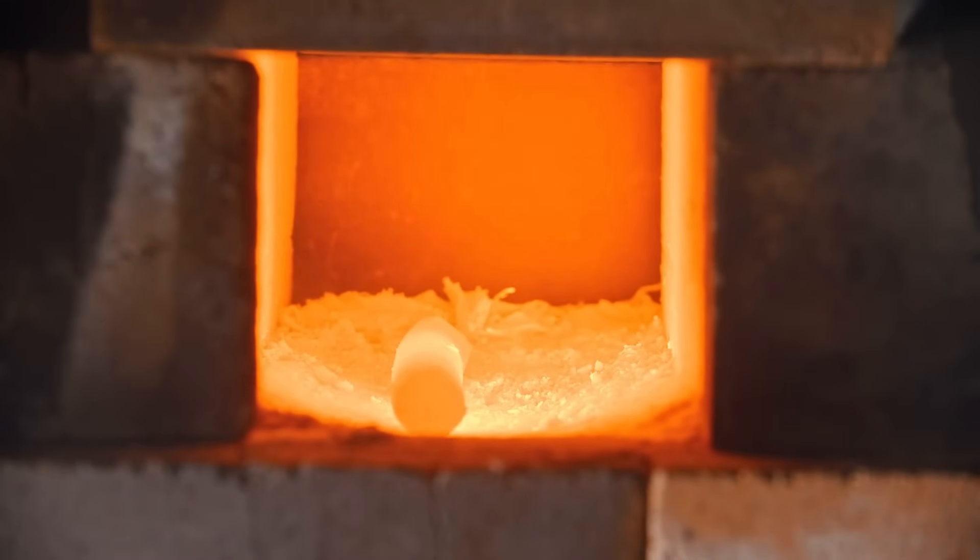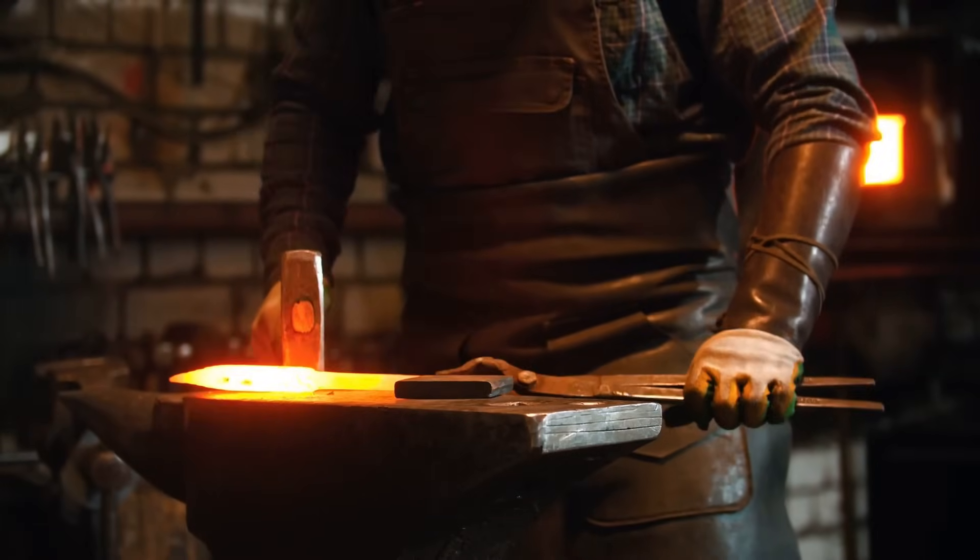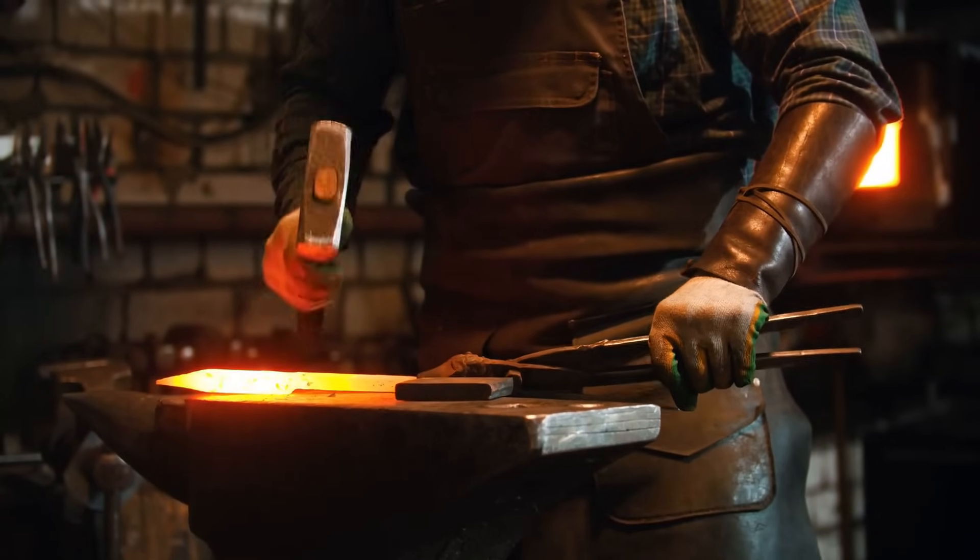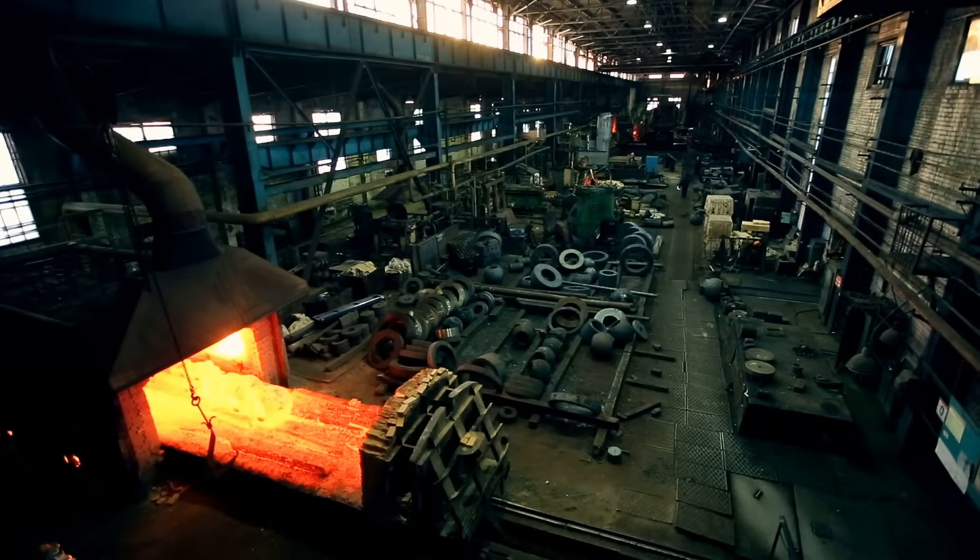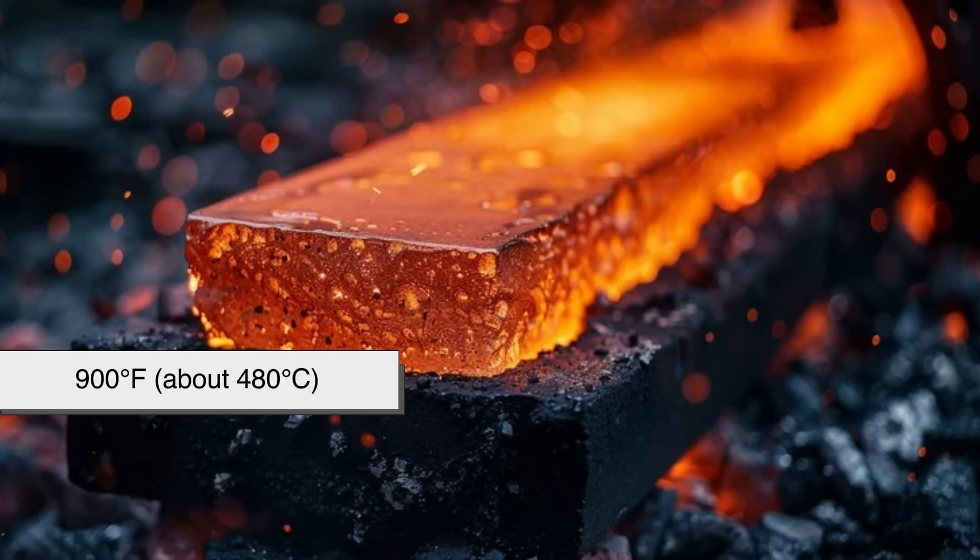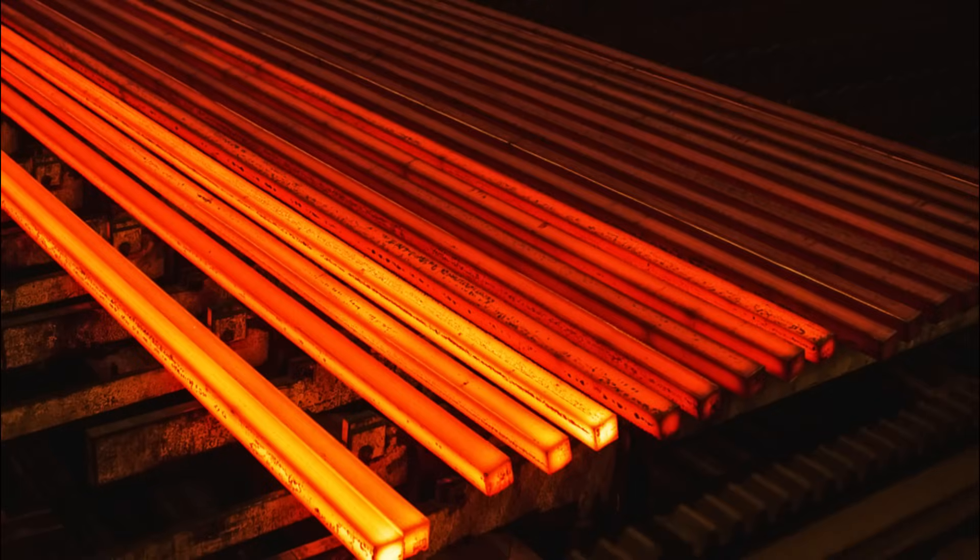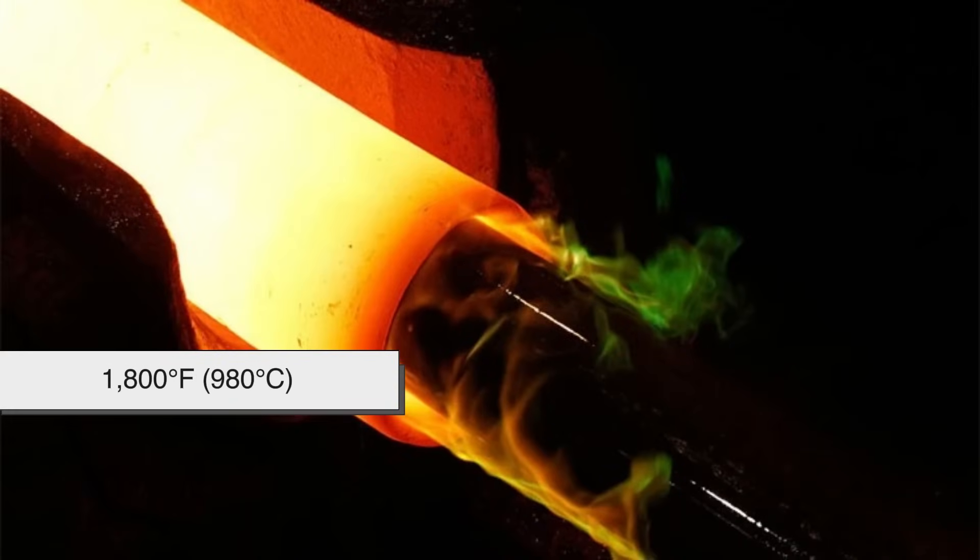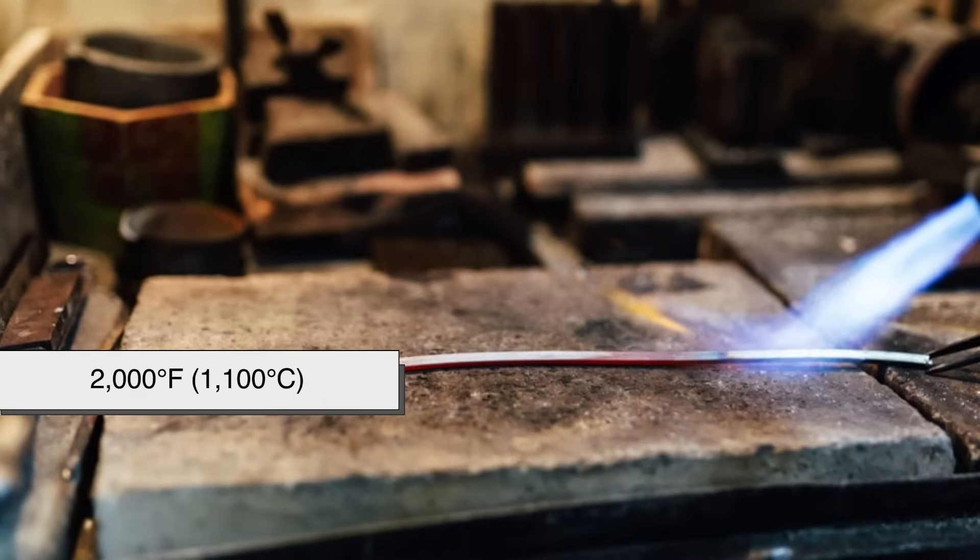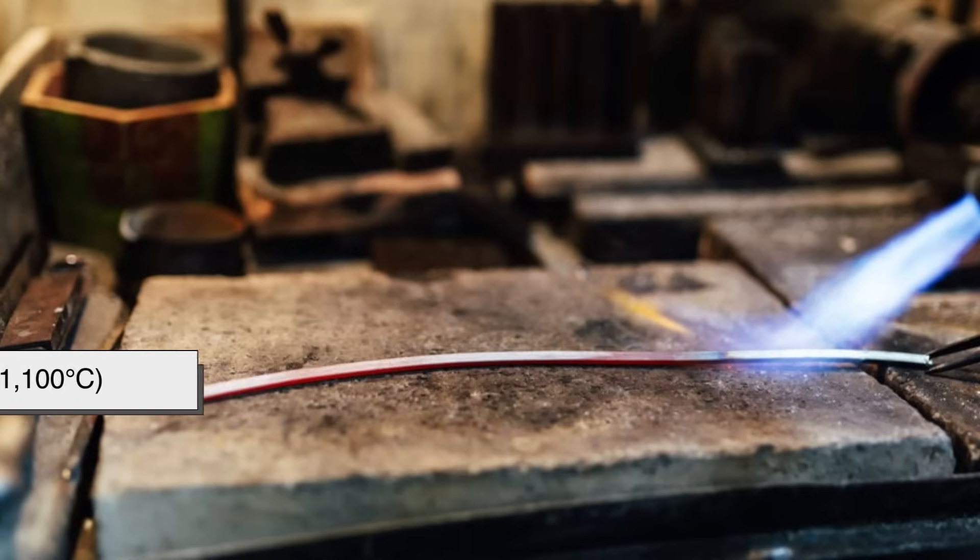Now, in the case of steel, there are two types of color changes happening when it's heated, and they're not the same thing. The first is incandescence, the glowing we just talked about. As steel gets hotter, it literally glows. At around 900 degrees Fahrenheit, about 480 degrees Celsius, steel begins to emit a dull red glow. Heat it more and it turns cherry red, then orange at around 1650 degrees Fahrenheit, 900 degrees Celsius. Yellow around 1800 degrees Fahrenheit, 980 degrees Celsius, and finally white above 2000 degrees Fahrenheit, 1100 degrees Celsius.